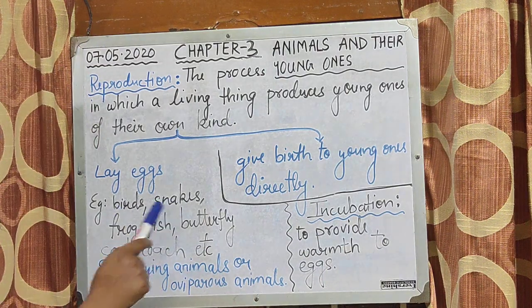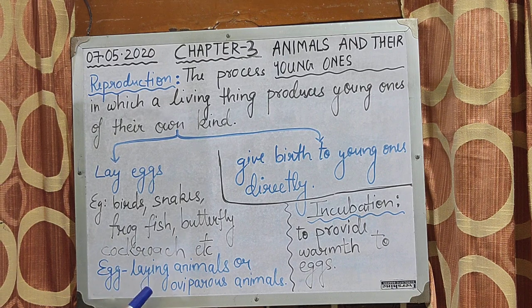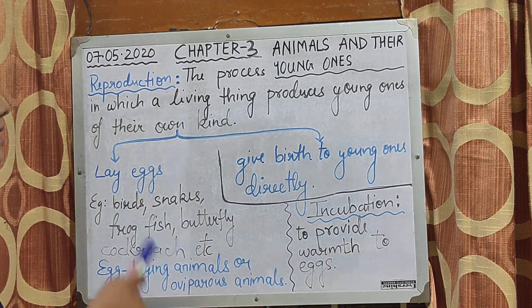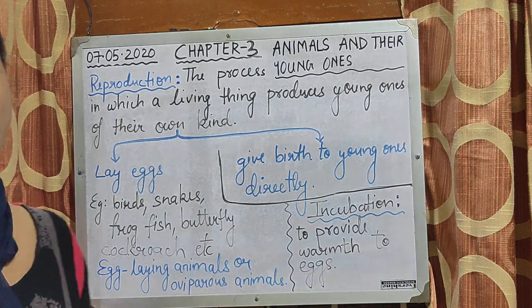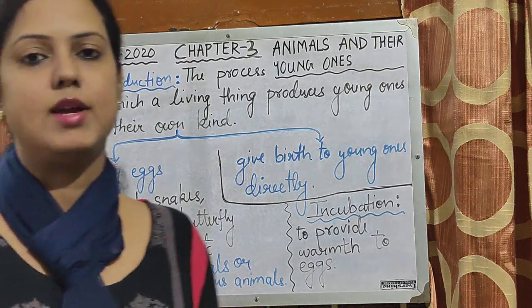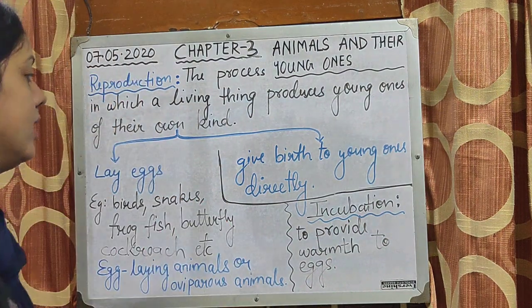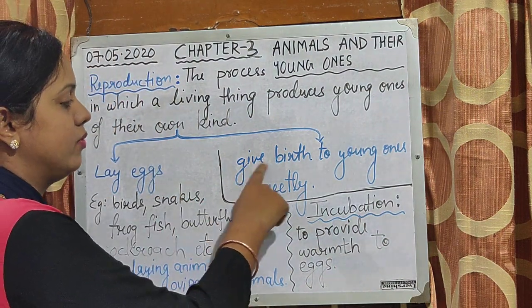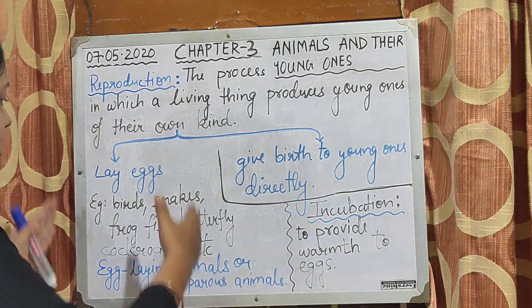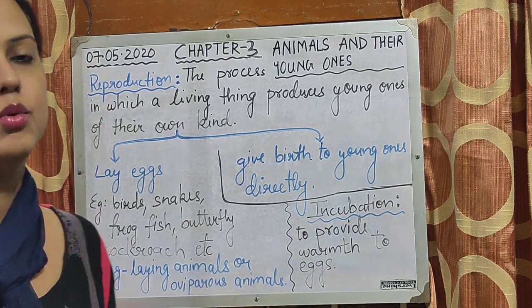Birds, snakes, frog, fish, butterfly, and cockroach are animals which give birth to their young ones by laying eggs. So today we are going to discuss the animals which reproduce by laying eggs and see how they lay their eggs and how the young one hatches from the egg. In the next week, we will see animals which give birth to young ones directly.